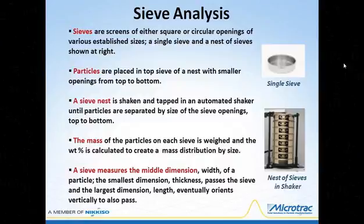This slide is just a quick review of current methodology, but the next slide may bring out some points that have been forgotten. Sieves are screens with openings of various established sizes. Particles are placed on the top sieve in a nest with ever-decreasing opening sizes top to bottom. The nest is shaken and tapped in an automated shaker until particles are separated by size. The mass on each sieve is weighed and weight percent calculated to create a mass distribution by size. Sieves measure the middle dimension, width, of a particle; the smallest dimension passes and the largest eventually orients vertically to also pass.